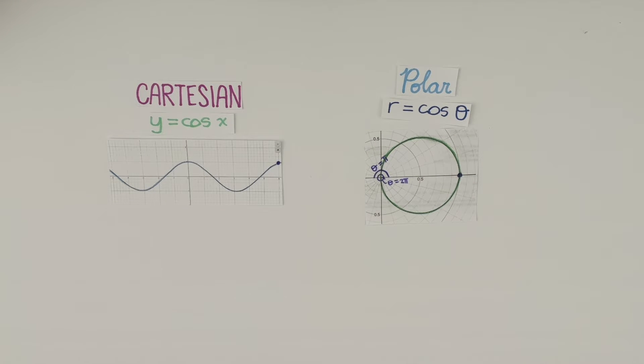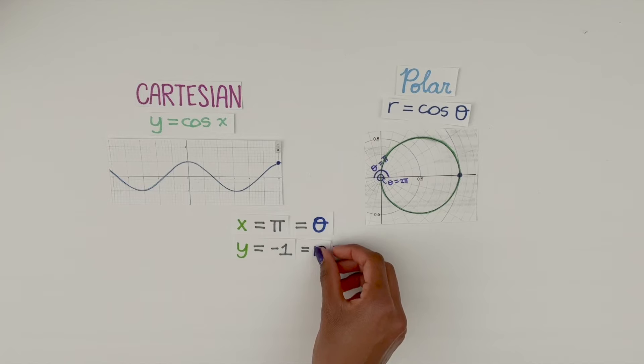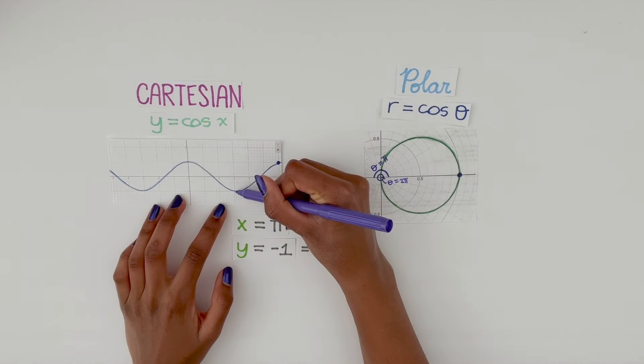But let's say x was π. For a Cartesian graph, the value would be y equals negative 1. And theta would also be π, making r negative 1 as well. On the Cartesian graph, it would be represented by this point.